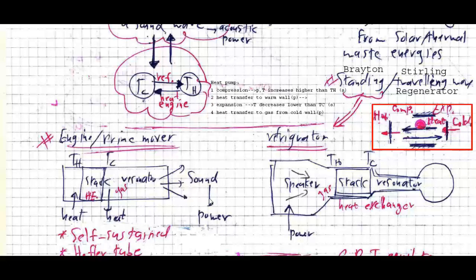In the engine version, heat is injected and also extracted from the cold side, and the result is the generation of a sound wave which can be converted to power. In the refrigerator version, a speaker is placed at one end; power is delivered to the speaker and it generates acoustic waves. These acoustic waves pump heat from the cold reservoir towards the hot reservoir using heat exchangers. This is the schematic of a refrigerator or prime mover using the Brayton cycle.